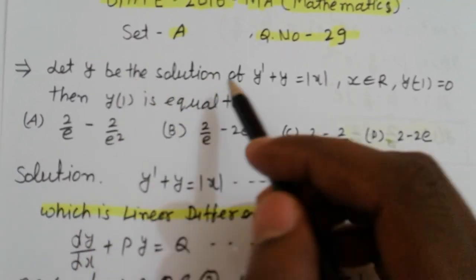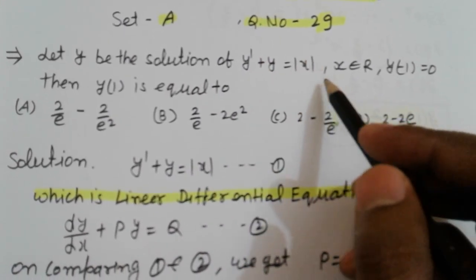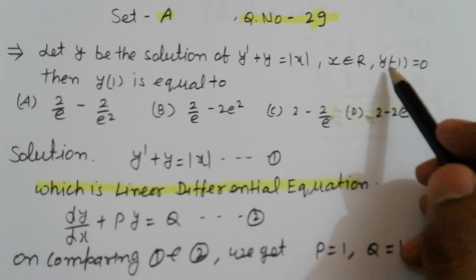Let Y be a solution of Y dash plus Y equals magnitude of mod of X, where X belongs to R.